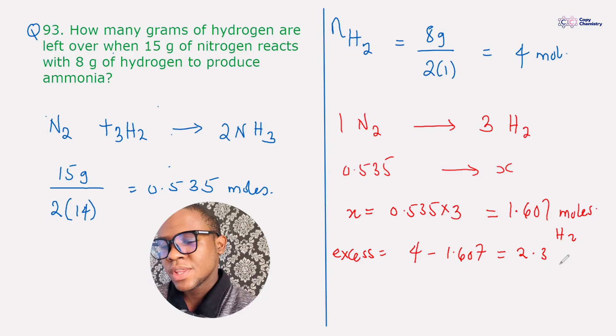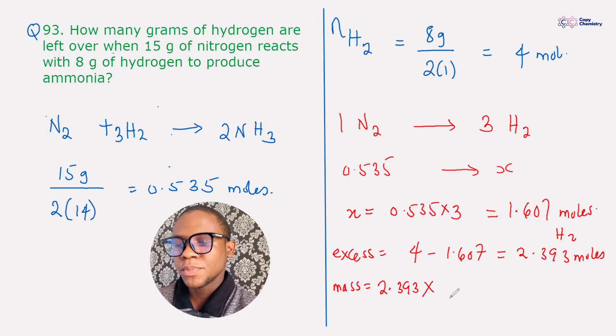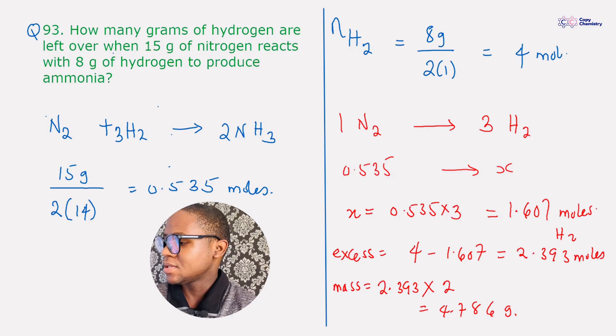That's 2.393 moles of hydrogen. That is the number of moles that is left over of hydrogen. So how do we complete that to get the mass of hydrogen? It's the number of moles we have multiplied by the molar mass of hydrogen, and that would give us 4.786 grams, and that is just our answer.